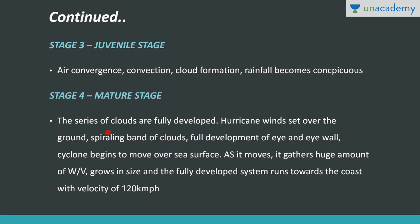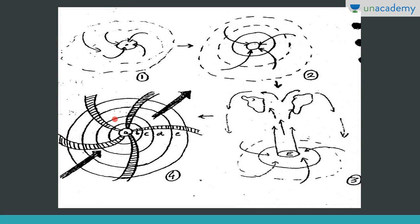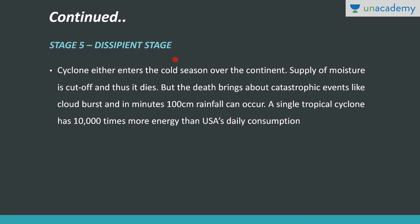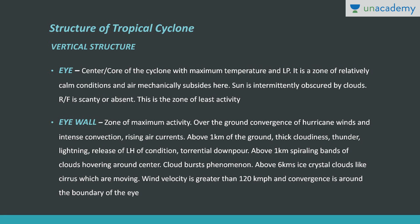In the fourth stage, the mature stage, the series of clouds are fully developed with full development of the eye and eye wall, spiraling bands of clouds, and hurricane winds of high velocity. The cyclone system begins to move over the sea surface. In the final discipline stage, when the cyclone falls on land, the supply of moisture is cut off and the cyclone gradually dissipates. However, as it falls on land it brings catastrophic weather events like cloud burst and heavy rainfall up to 100 centimeters within minutes.